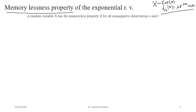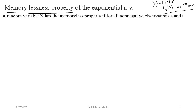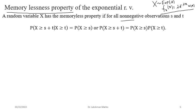We define memorylessness as follows: suppose we have a random variable X with non-negative observations (since exponential is defined for non-negative values). The baseline for defining memorylessness is either the exponential random variable or its discrete version, the geometric random variable. Memorylessness says: define event A as X ≥ t, and the future situation as X ≥ s+t.